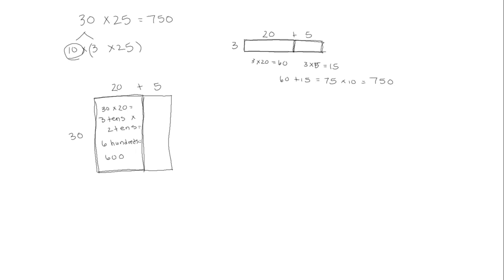Then for the second rectangle, length times width would be 30 times 5. In unit form, 3 tens times 5. 3 times 5 is 15 tens, and 15 tens is 150. So 600 plus 150 gives us 750 — the same answer as before, but we did it in one step.